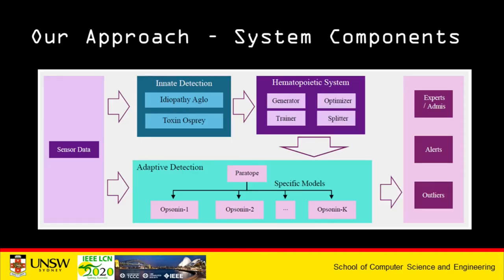This is the overall architecture of the system. On the left-hand side we have the input data, which is mainly the traffic generated by IoT devices, and on the right-hand side we have the output, in which we perform detection of outlier botnets, generate alerts, and provide experts and admins views of different statuses. Our innate detection is comprised of idiopathy aglose and toxin ospre agents. The core of our system is the hemipatic system, which contains a generator, optimizer, trainer, and separator of neural network models called obscenines, that provide the adaptive detection of the whole system and are specific to each product.